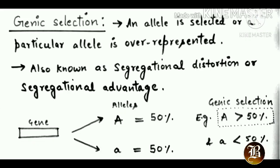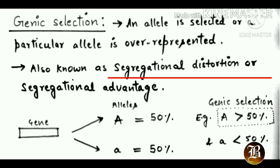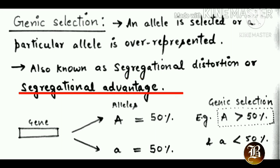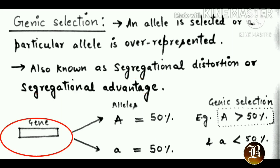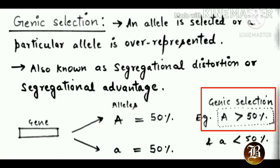Genic selection is the first type. Here one allele is selected, or you can say one allele is over-represented. Genic selection is also known as segregational distortion or segregational advantage. There is one gene with two alleles: capital A, the dominant allele, and small a, the recessive allele. Generally the two alleles are represented at 50% concentration each. But if capital A has some advantage for the survival of the individual, it will be represented more than 50%, and genic selection occurs because allele A is selected or over-represented.